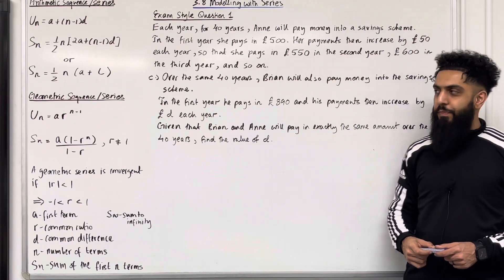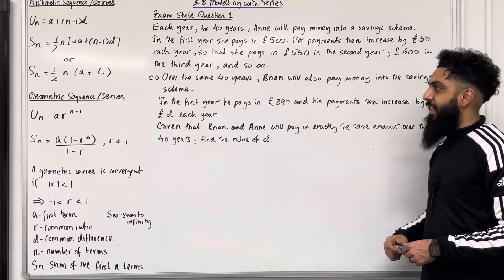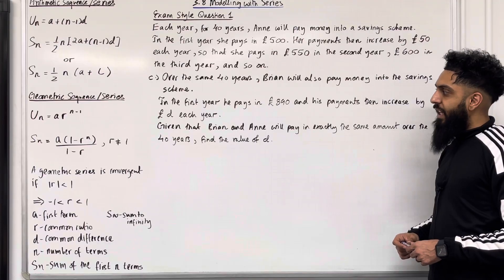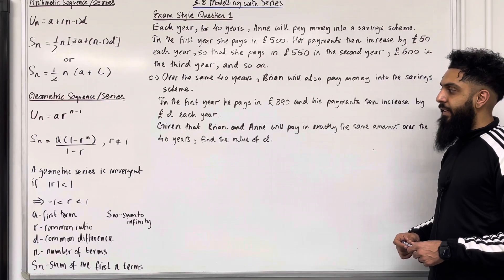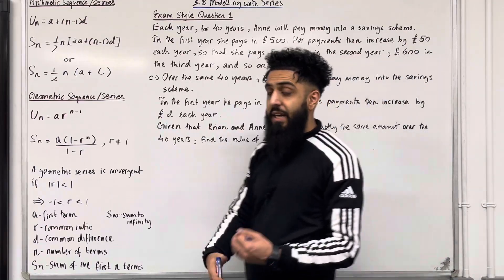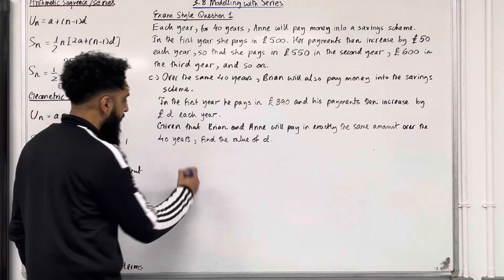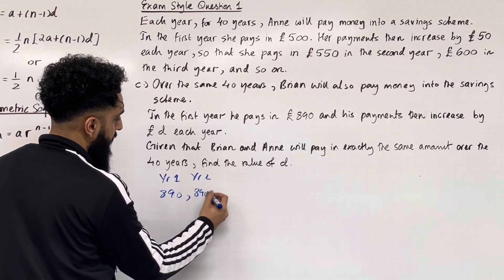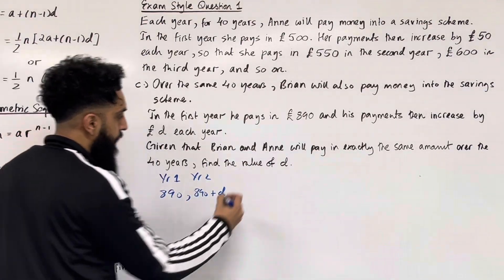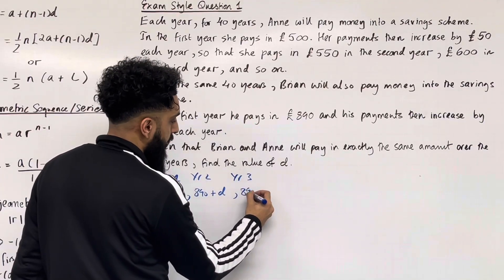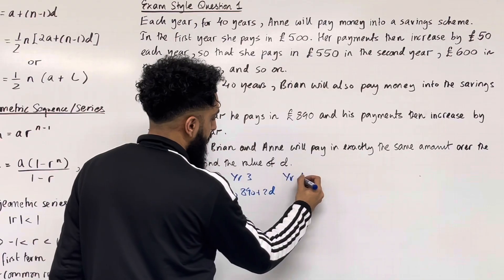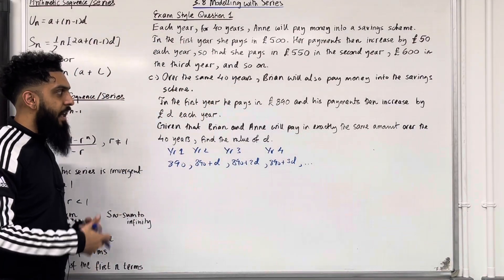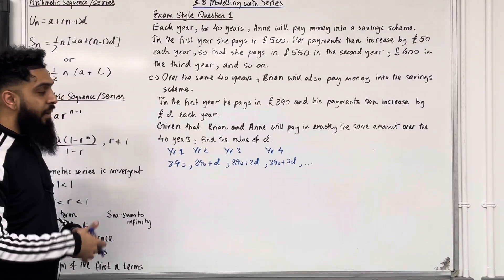Let's have a look at part C of exam-style question 1. Over the same 40 years, Brian will also pay money into the savings scheme. In the first year he pays in £890, and his payments then increase by D pounds each year. Given that Brian and Anne will pay in exactly the same amount over the 40 years, find the value of D. I'm going to write down the first few terms in the sequence for Brian: year 1 is £890, year 2 is £890 + D, year 3 is £890 + 2D, year 4 is £890 + 3D, and so on.